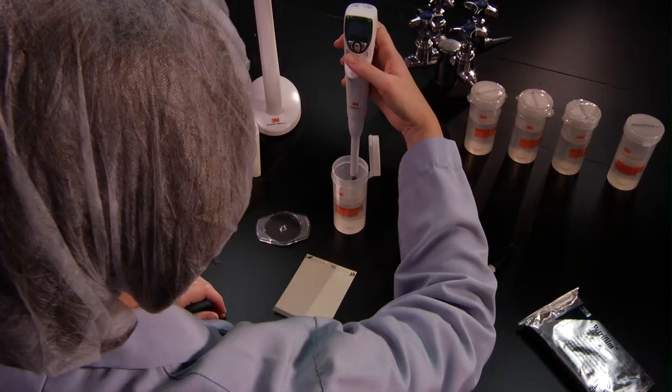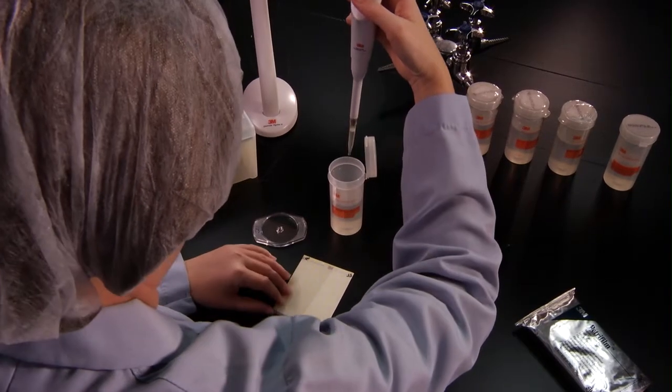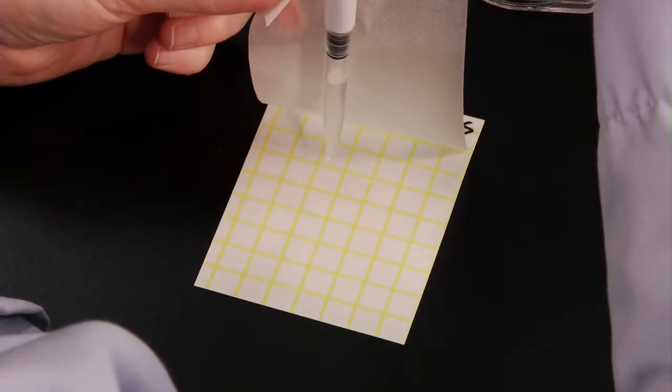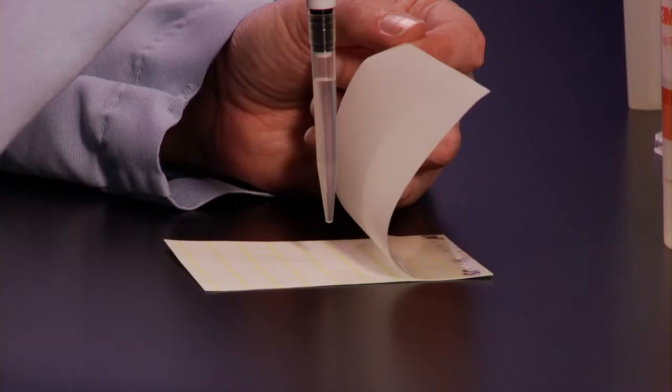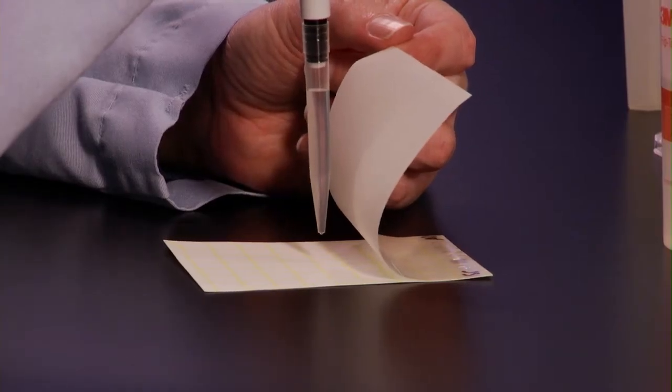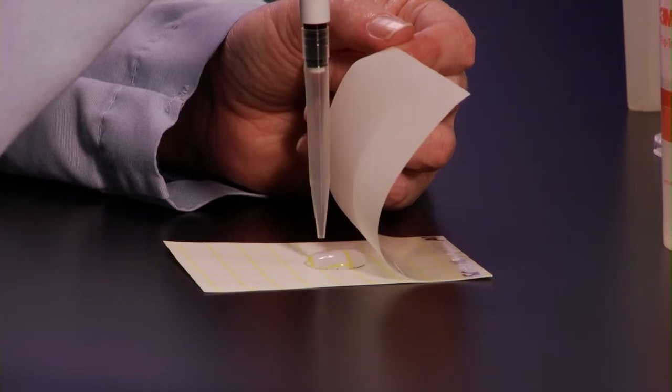Draw 1 milliliter of the sample into the pipetter. Lift the top film and hold the pipetter perpendicular to the 3M PetriFilm plate. Pipet the sample onto the center of the bottom film.